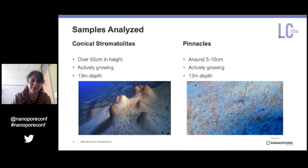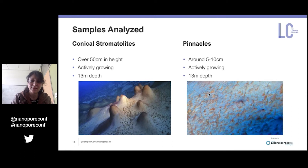Morphological differences can be seen clearly. One is conical and can grow to a height of half a meter, while the other, known as pinnacle mats, are cusp-shaped and are no taller than 10 centimeters. The pinnacle mats that were collected were growing in between the conical stromatolites.